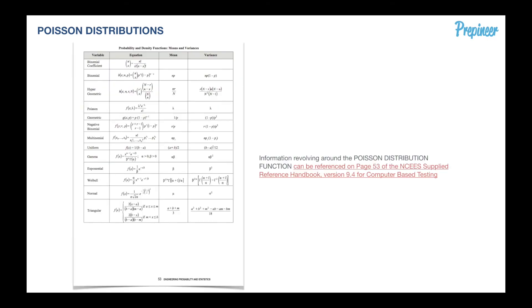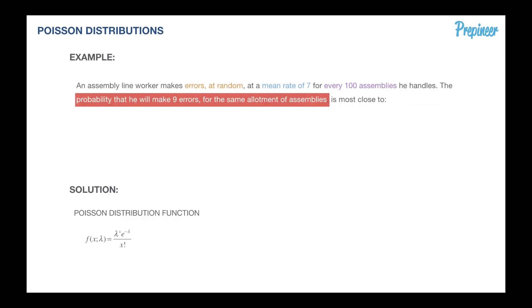Again, we are looking for the probability that he will make nine errors for the same allotment of assemblies. We hop back to page 53 of our NCEES supplied reference handbook, again version 9.4. If you're looking at any other version, it may be a different page, but there will be a table showing all the probability and density functions that you will need to know come exam day. Specifically, we are just worried about the Poisson. We pull that back over to our problem statement. Again, we are going to have some probability output when we relate the mean and the random discrete variable. What are we given? The mean is seven errors.